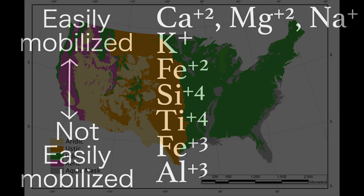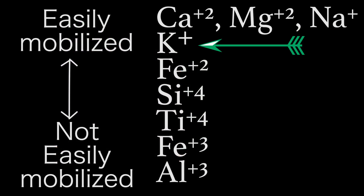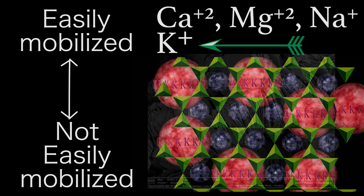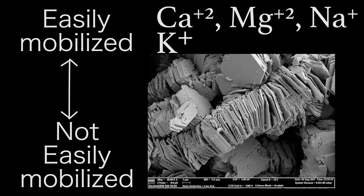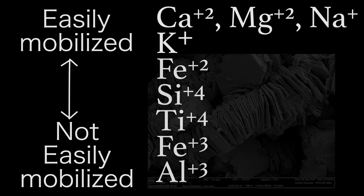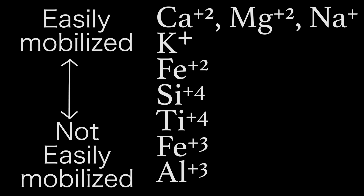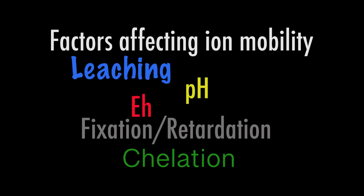For example, potassium, though relatively mobile, can get trapped in the formation of clays if the other needed constituents are present, keeping potassium from really migrating too far. The degree and relative levels of mobility of ions can be shifted mainly due to leaching, pH, the acidity, the redox potential, fixation and retardation, and chelation.